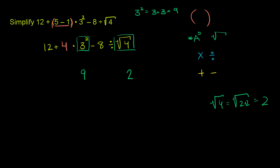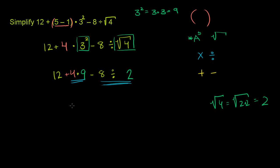We have 12 plus 4 times 9 minus 8 divided by 2. We're done with parentheses and exponents, so now we go to multiplication and division. 4 times 9 is 36, and 8 divided by 2 is 4. So we are left with 12 plus 36 minus 4.